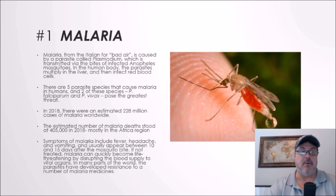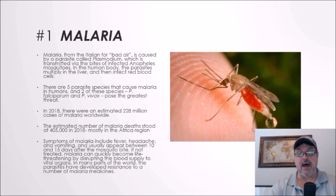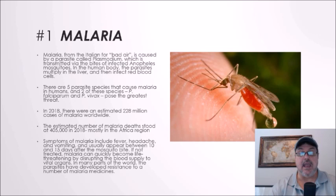I want to start out with the granddaddy of them all, and that's malaria. Malaria — from the Italian for 'bad air' — is caused by a parasite called Plasmodium, which is transmitted via the bites of infected Anopheles mosquitoes. In the human body, the parasites multiply in the liver and then infect red blood cells. There are five parasite species that cause malaria in humans.